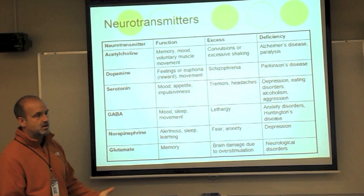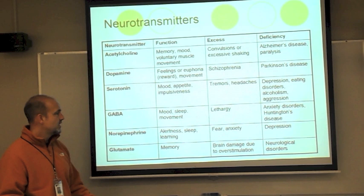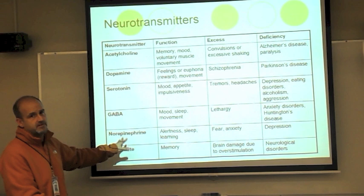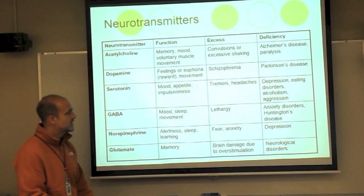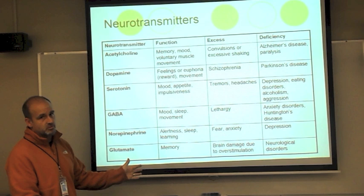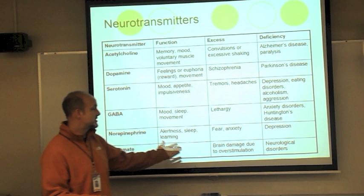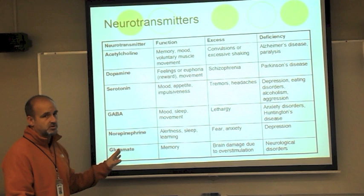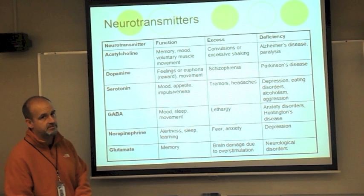Norepinephrine is involved with alertness — when released, you become very alert. Too much norepinephrine is connected with anxiety and fear, playing a key role in fight-or-flight via the sympathetic nervous system. A deficiency would account for depression. Glutamate is in charge of memory — too much glutamate leads to brain damage or overstimulation, while too little can lead to certain neurological disorders.